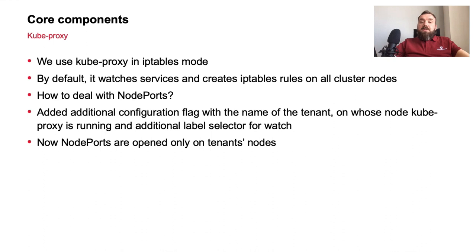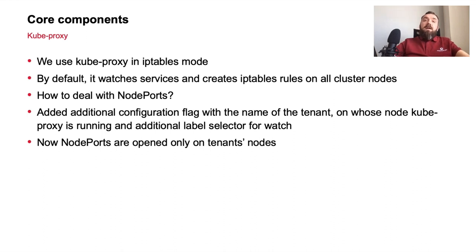A few words about NodePort and multi-tenancy: we use kube-proxy in iptables mode, and by default it watches services and creates iptables rules on all cluster nodes — which is fine for ClusterIP services, but a problem for NodePorts in a multi-tenant environment. So we forked kube-proxy and added an additional configuration flag with the name of the tenant on whose node kube-proxy is running, then added an additional label selector for the watch. This way, our kube-proxy watches only services located in the same tenant as the node it runs on, and NodePorts are opened only on the tenant's nodes.